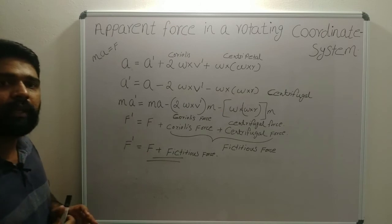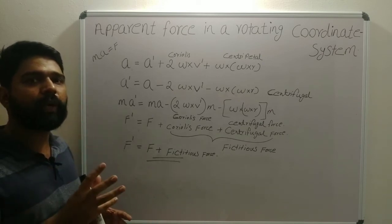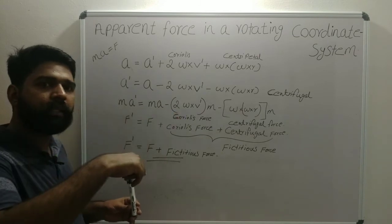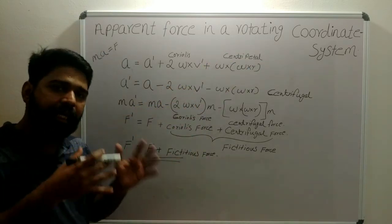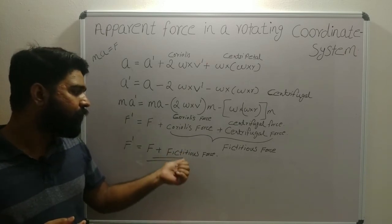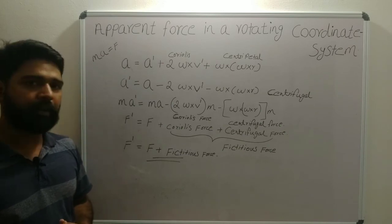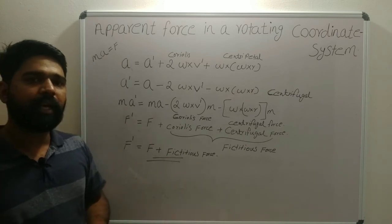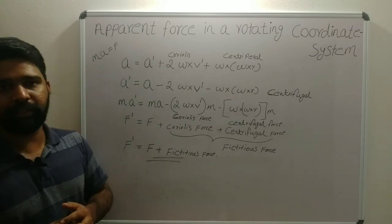If we consider actions or phenomena happening on the surface of the Earth, we know Earth is a rotating frame because it rotates on its own axis and also moves in a circular orbit around the sun. So Earth is a non-inertial frame. To solve problems on the Earth's surface, we must account for fictitious forces: Coriolis force and centrifugal force. In the next class we will definitely solve some problems related to the Earth's surface.